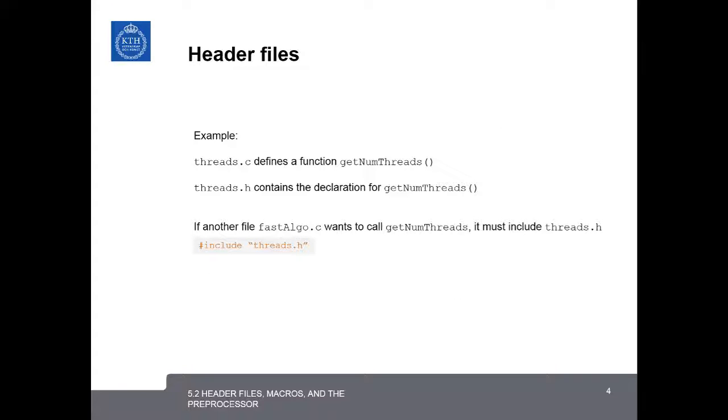Let's look at a simple example of how we would use a header file. First, if we had some C code that defined a function getNumberOfThreads, and this file was called threads.c, we would create a header file, threads.h, and that header file would contain the declaration for the function getNumberOfThreads. If another file, let's say it's called fastalgorithm.c, wanted to call that function getNumberOfThreads, it must do an include of threads.h.